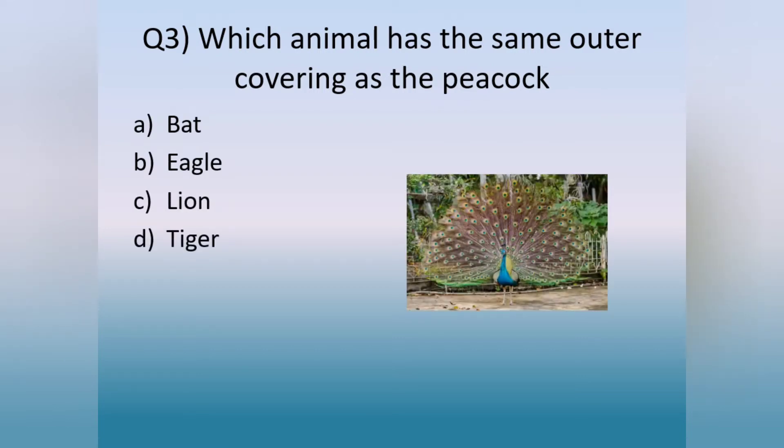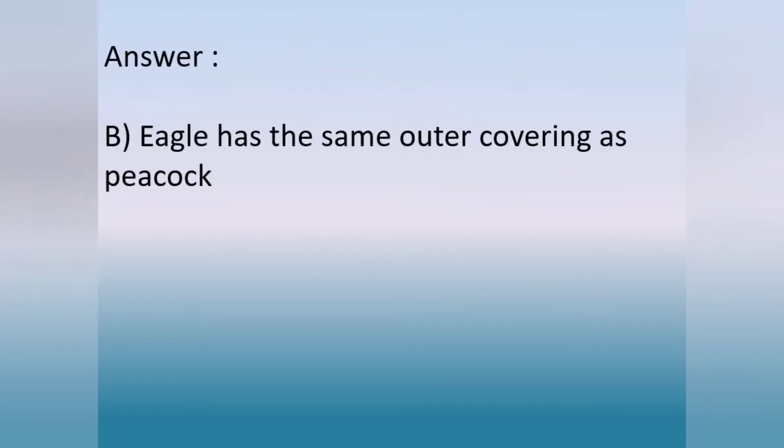Question number 3. Which animal has the same outer covering as the peacock? Option A. Bat. Option B. Eagle. Option C. Lion. Option D. Tiger. The answer is option B. Eagle has the same outer covering as the peacock.